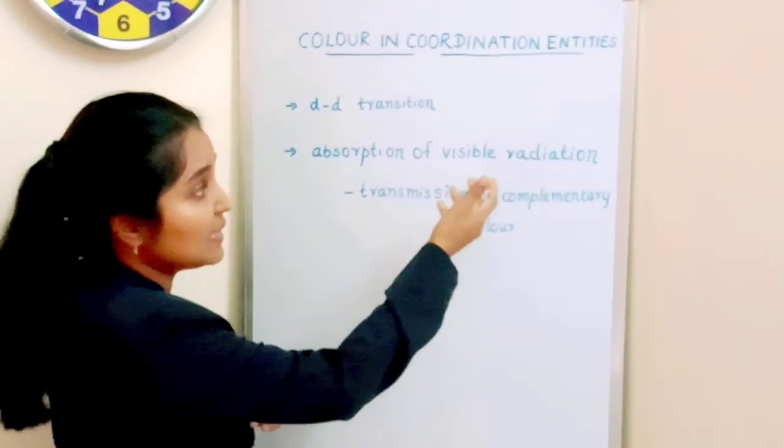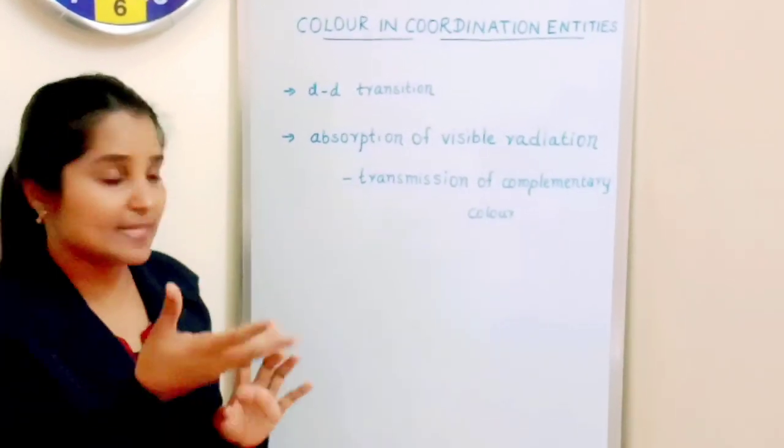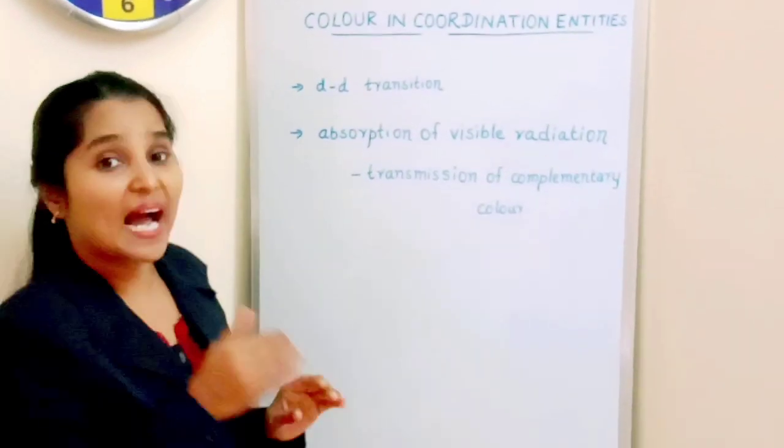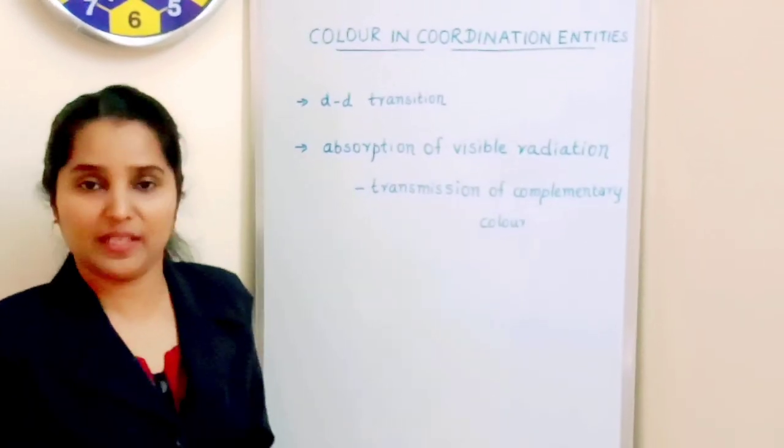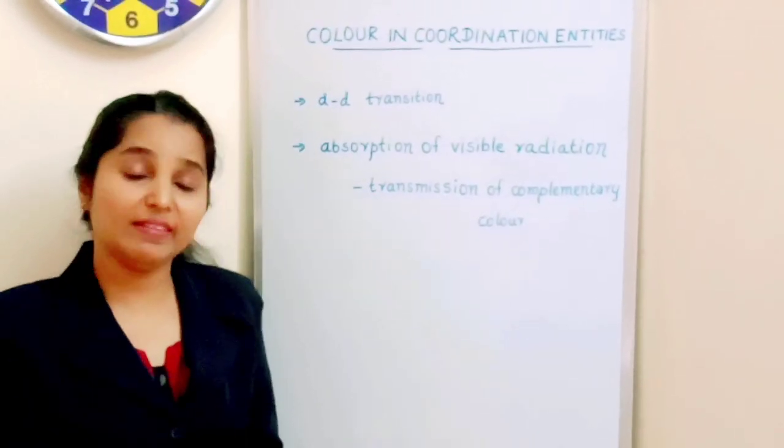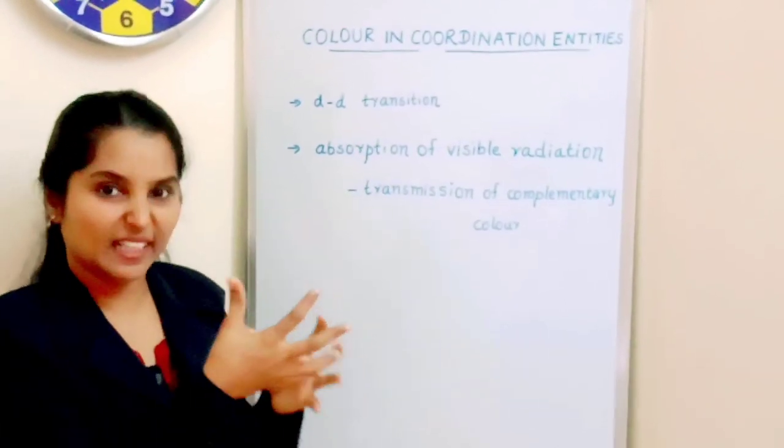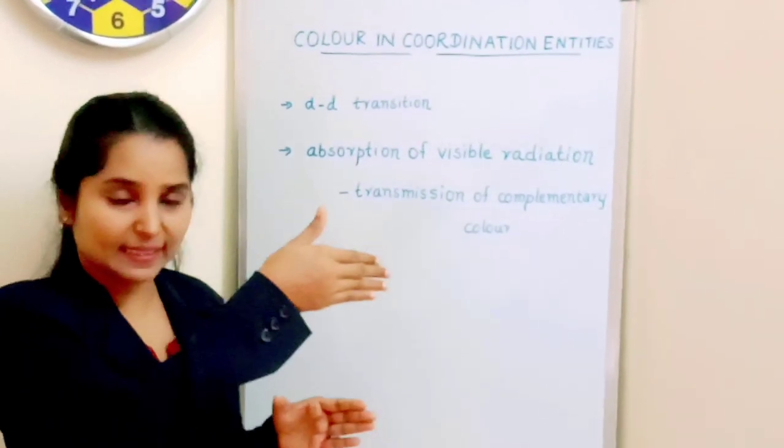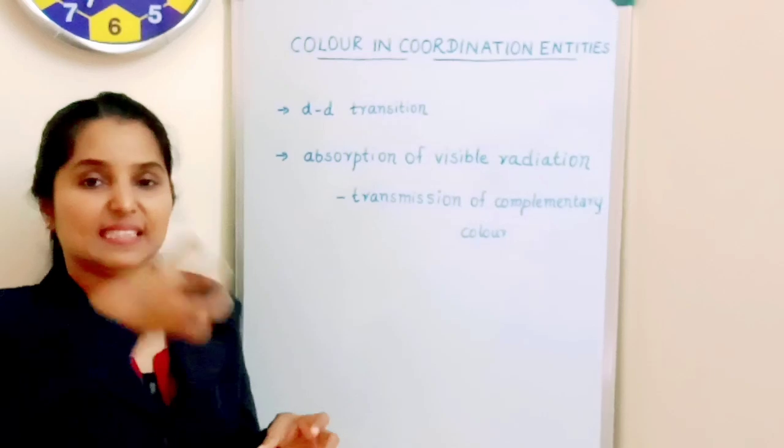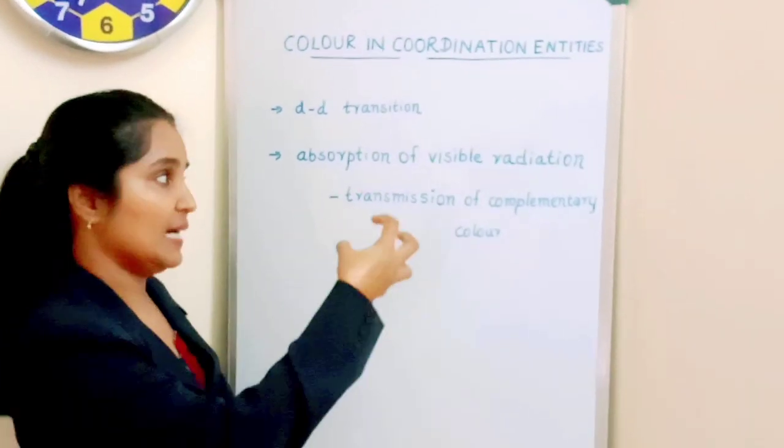That energy is absorbed, energy equal to the visible radiation. Frequency of energy is equal to the visible radiation, and that radiation is transmitted as complementary color. We will see the color that is absorbed by that particular electron during its jump from lower d-orbital to the higher d-orbital. We will see just the complementary color of what that electron has absorbed.